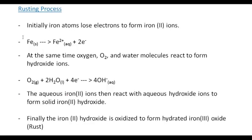The rusting process: initially iron atoms lose electrons to form iron(II) ions, expressed by this equation. At the same time oxygen and water molecules react to form the hydroxide ion. The aqueous iron(II) ions then react with the aqueous hydroxide ions to form solid iron(II) hydroxide. Finally, iron(II) hydroxide is oxidized to form a hydrated form of iron(III) oxide, which is rust.